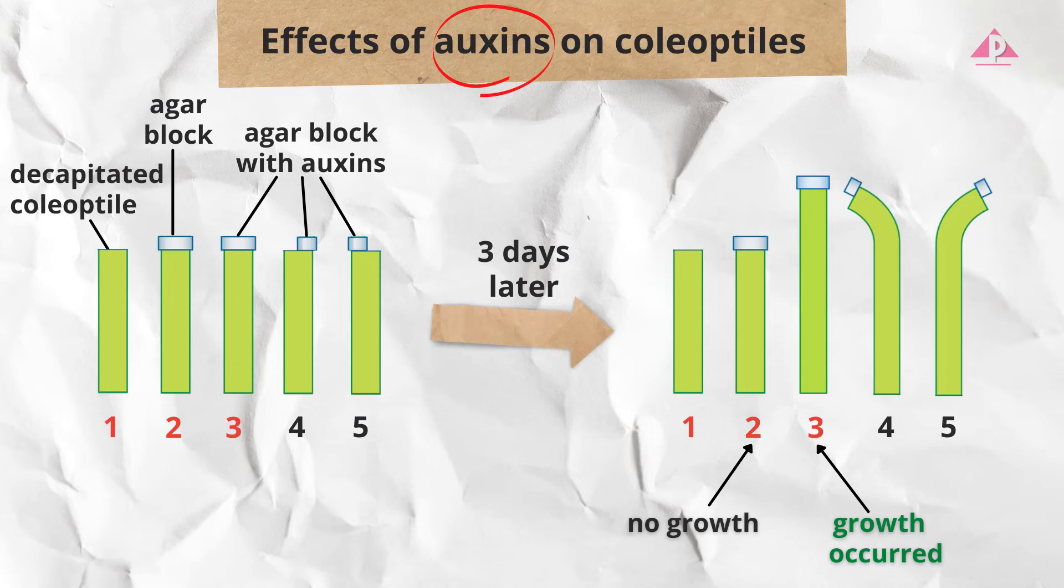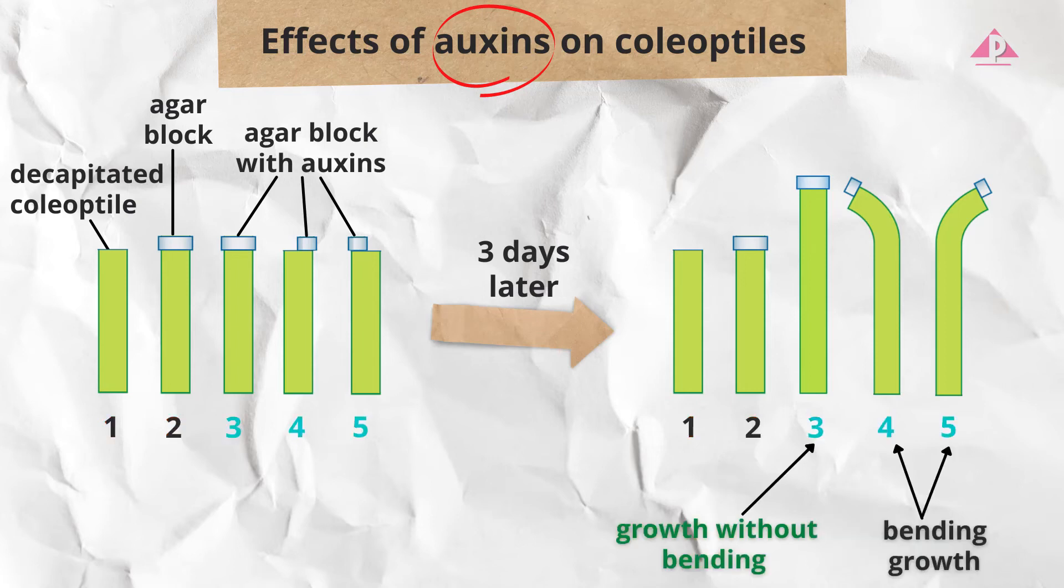Based on these comparisons we can deduce that decapitated coleoptiles will only grow when auxins are supplied. Therefore, we can conclude that auxins are growth-promoting substances. We can compare coleoptiles 3, 4 and 5 in a similar way and learn that an even distribution of auxins led to bending growth of the coleoptiles.